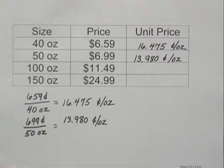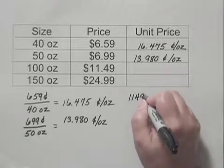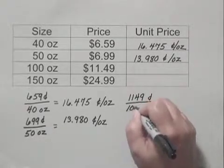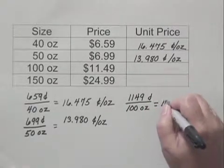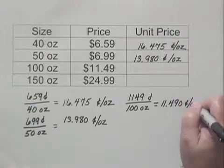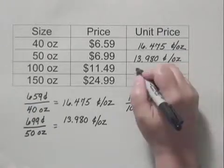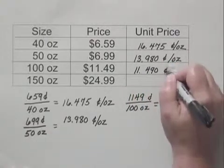Then for the 100 ounce container, we have 1,149 cents divided by 100 ounces. When we do that division, we get 11.490 cents per ounce. So we write that as our unit price, 11.490 cents per ounce.